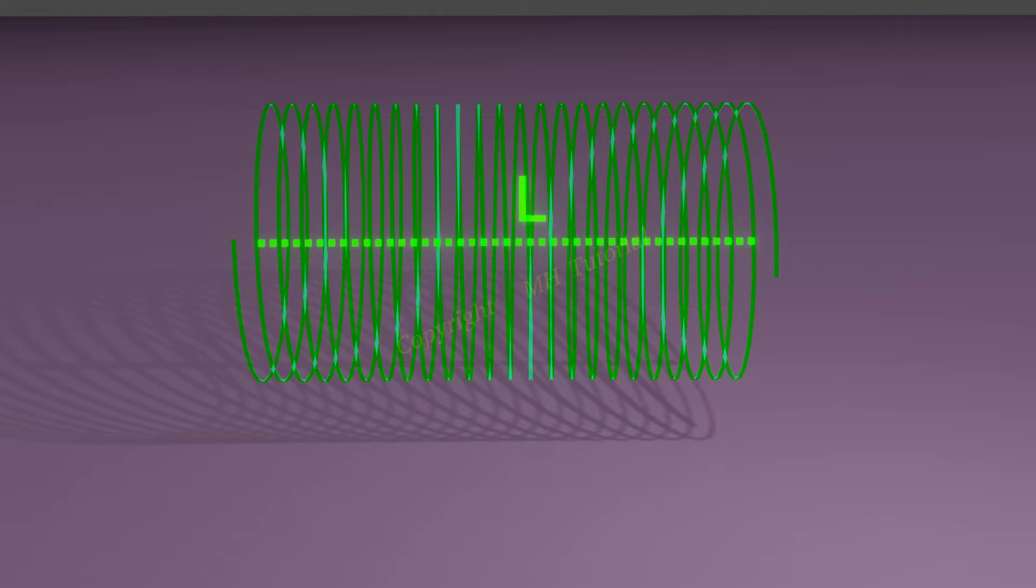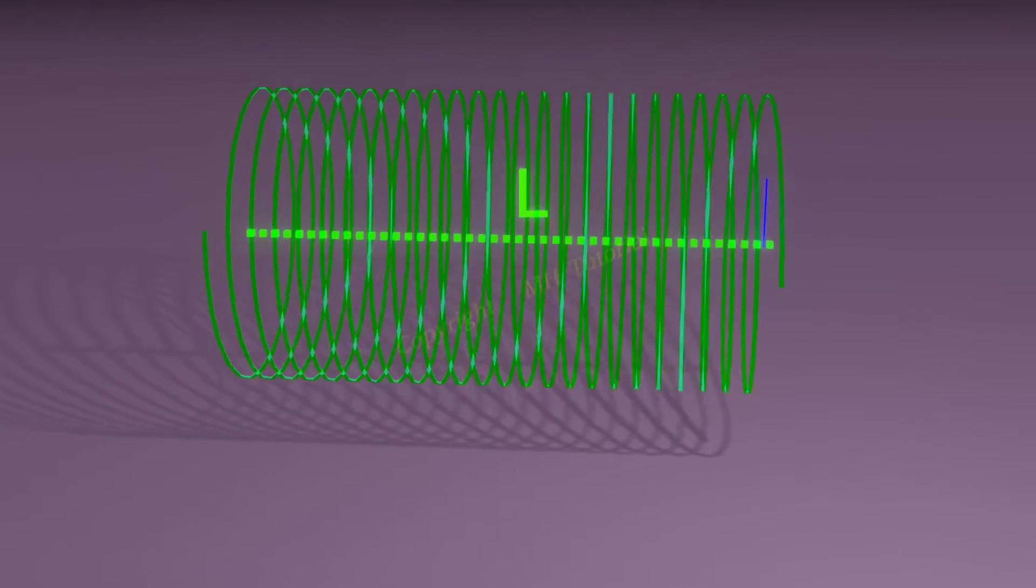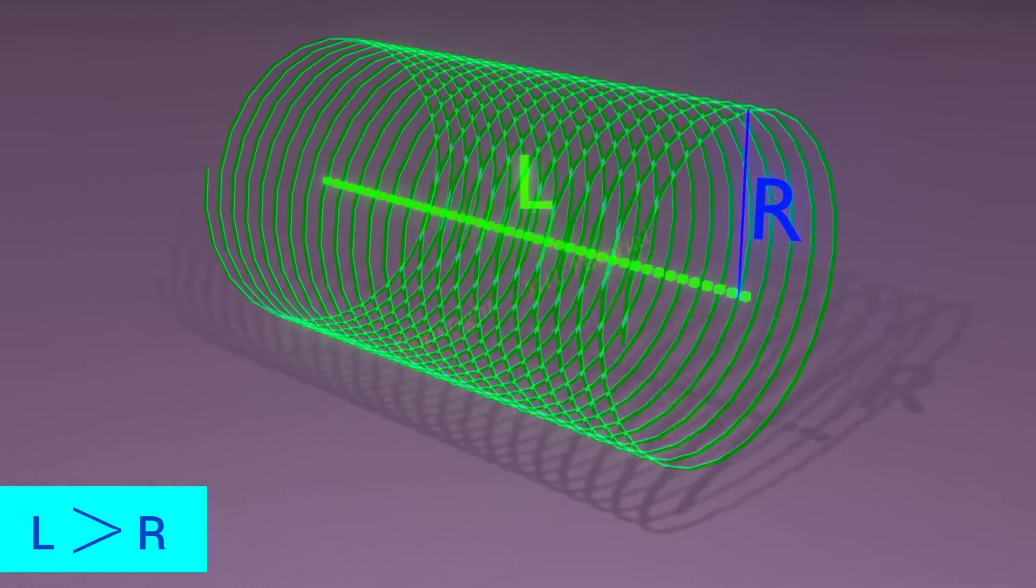What is a solenoid? In study of electromagnetism, solenoid is a spring-like current-carrying wire, whose radius is smaller than its length.